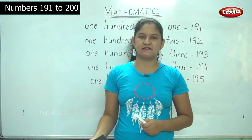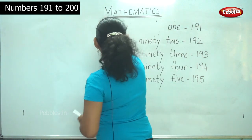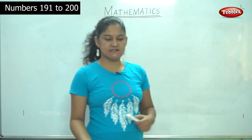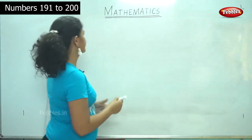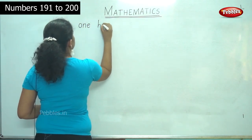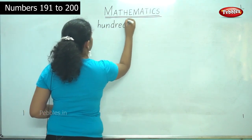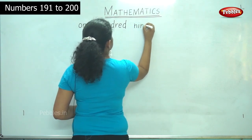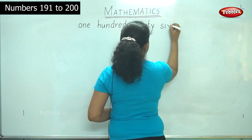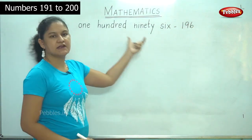Next we will move on to the next five numbers, that is from 196 to 200. So children, are you ready to write the next five numbers along with me? 196: O-N-E H-U-N-D-R-E-D N-I-N-E-T-Y S-I-X. 1-9-6, 196.